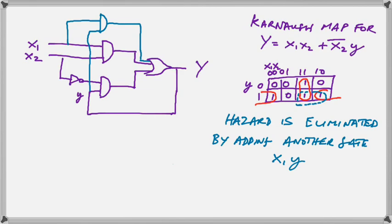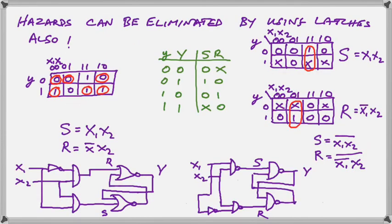There's another way to prevent hazards and that is to use latches. Here we've constructed a latch for the exact same transition table, and we've constructed it both with the NOR gates and the AND gates. And if you don't understand how this is done, I have another video that shows you how to build circuits using latches. Please go and watch that and then come back.